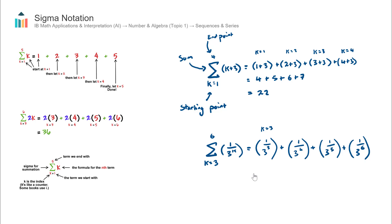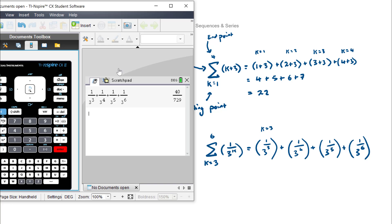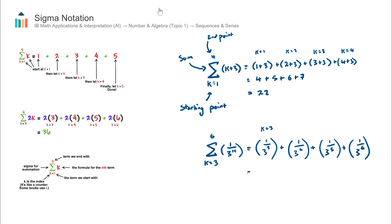I stop there because my endpoint, my end value for k, is 6. You can use your calculator to find the result. I have entered that there, hit enter, and the result is 40 over 729. That concludes our video on sigma notation.